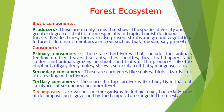Biotic Components. Producers: These are mainly trees that show species diversity and a greater degree of stratification, especially in tropical moist deciduous forests. Besides trees, there are also shrubs and ground vegetation. In forests, dominant members are trees such as teak, deodar, sal, pine, etc.